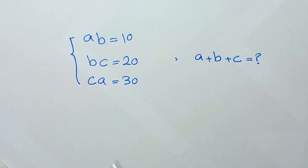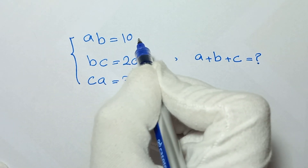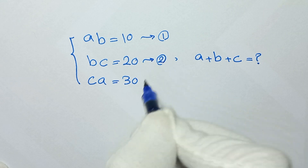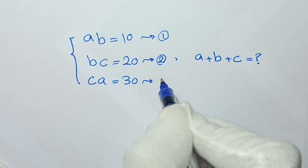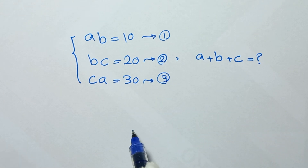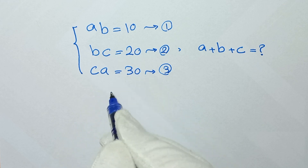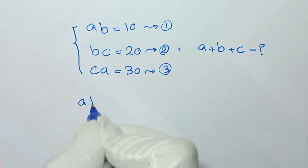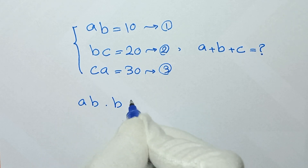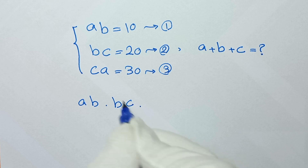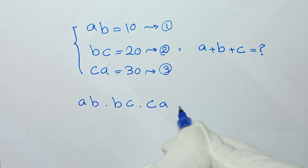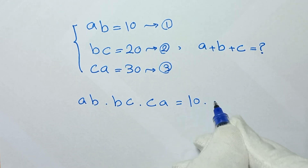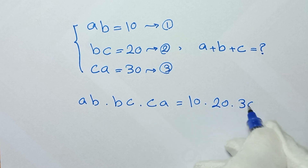In the first step, we start by letting AB=10 as equation 1, BC=20 as equation 2, and CA=30 as equation 3. In the next step, we multiply these three equations together, so it will be AB times BC times CA equals 10 times 20 times 30.